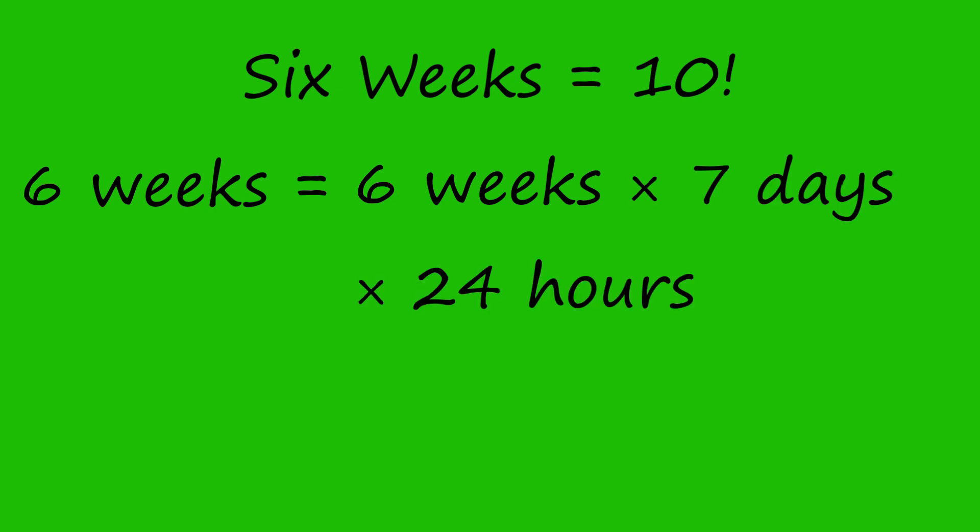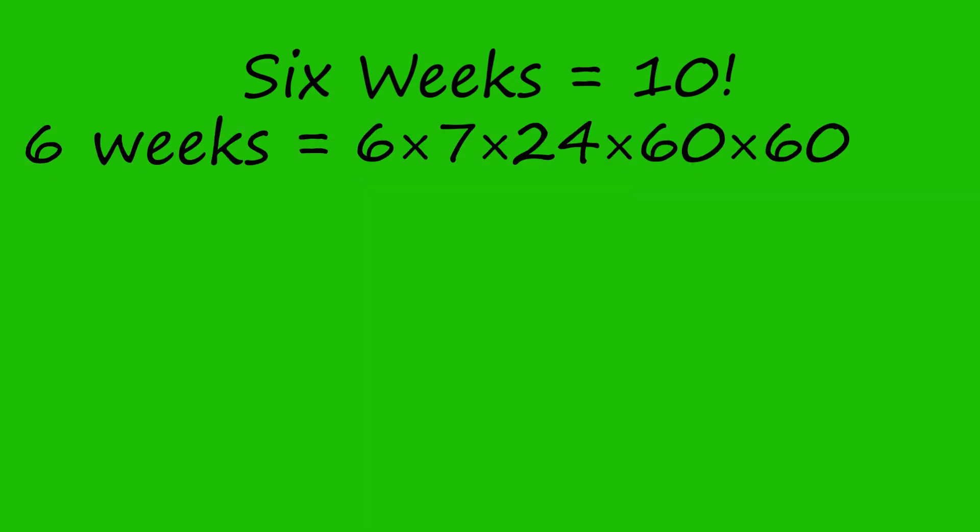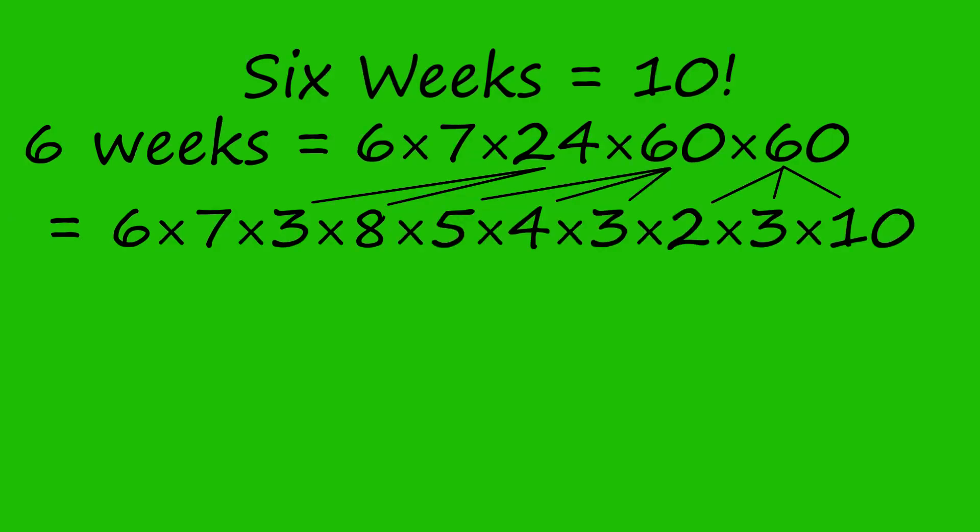Six weeks is exactly 10 factorial seconds. This is because six weeks is equal to six weeks times seven days times 24 hours times 60 minutes times 60 seconds. But 24 is equal to three times eight, and 60 can be written as both five times four times three and two times three times ten.